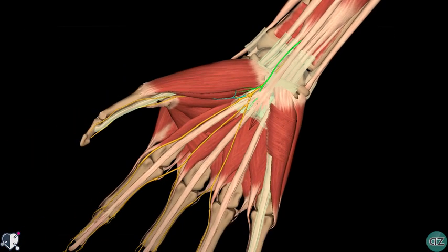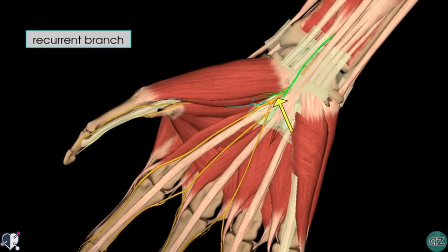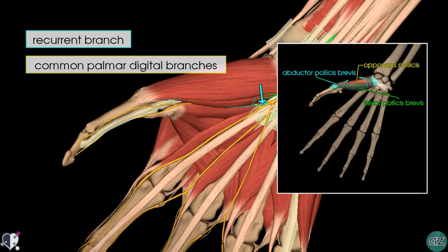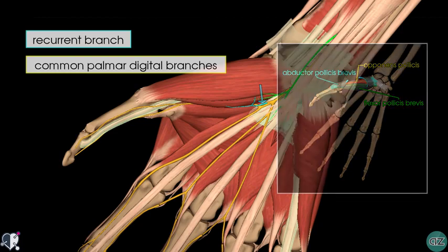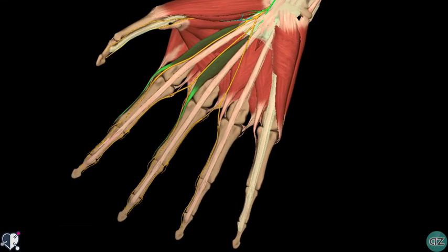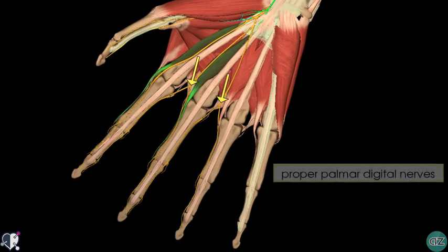The median nerve then enters the hand after passing through the carpal tunnel and divides into a recurrent branch, highlighted in blue, and common palmar digital branches. The recurrent branch innervates the thenar muscles — you can see it here supplying the flexor pollicis brevis and the abductor pollicis brevis, and it also passes between these two muscles to supply the opponens pollicis. The palmar digital branches supply the lateral two lumbricals of the hand. The common palmar digital nerves then divide to become the proper palmar digital nerves, supplying the palmar surface and fingertips of the lateral three and a half digits.